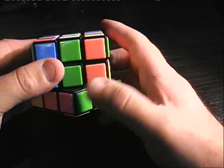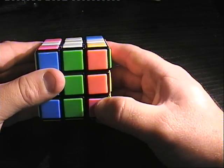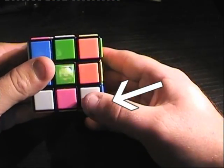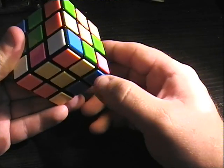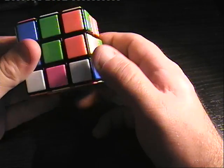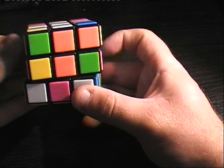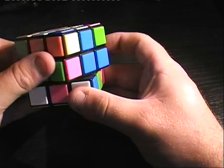So let's look at this piece here. We can see it's got three colors: it's got orange, it's got blue, and it's got white. So it's one of the ones that we need.